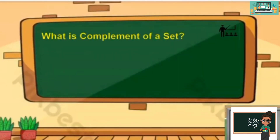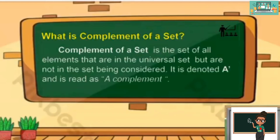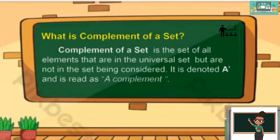What is the complement of a set? The complement of a set is the set of all elements that are in the universal set but are not in the set being considered. It is denoted as A prime and is read as A complement.